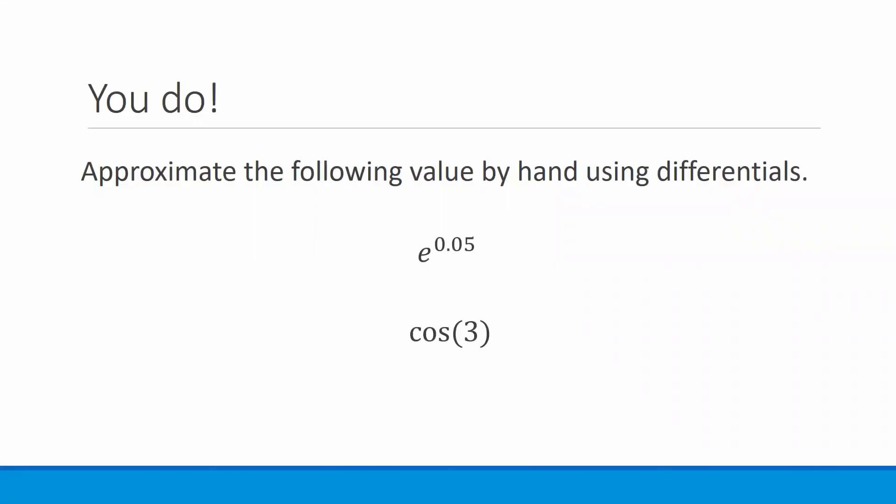I would like you to approximate the following two values by hand using differentials: e to the 0.05 and cosine of 3. Just to give you a hint, e to the 0.05, that's close to e to the 0. And cosine of 3, well, 3 is pretty close to pi. So try approximating these things by hand.